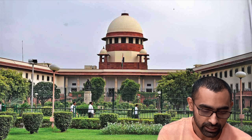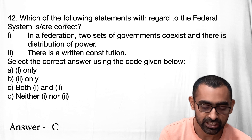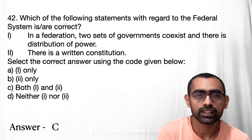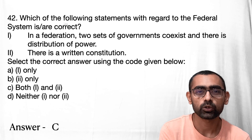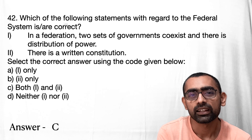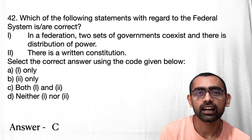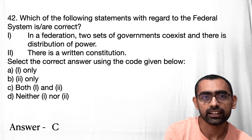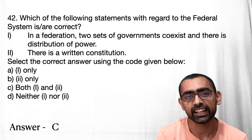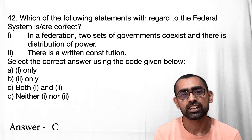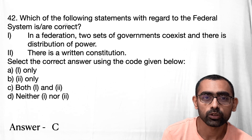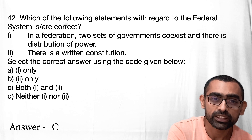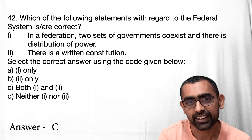Moving on to question 42, which is about the federal system. In a unitary system there is one central government controlling everything with no devolution of power to units. In a federal system, state governments exist and there is devolution and decentralization of power from the central government to the states. That is what is called a federal setup.